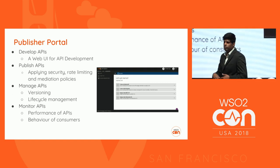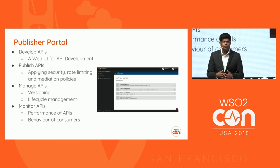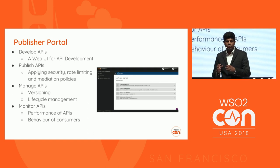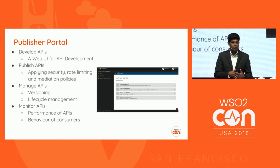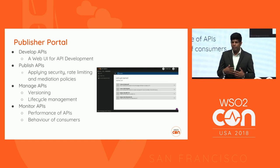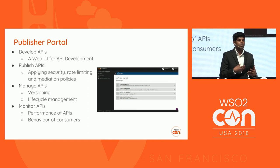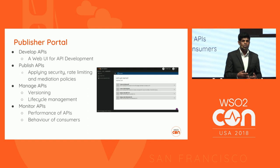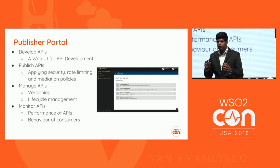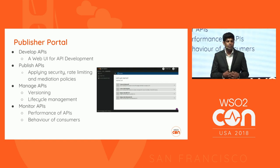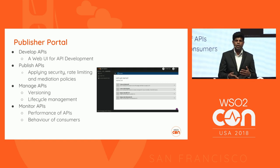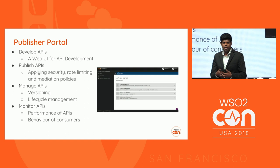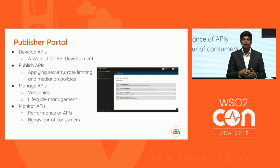After publishing, you can manage versioning and lifecycle, creating multiple versions and moving your API through multiple lifecycle stages. The publisher also provides monitoring capabilities with multiple dashboards to monitor API performance and subscriber behavior - including latency, throughput, and total calls. You can see how your API is consumed by subscribers and application developers, enabling both business and architectural decisions about your API.